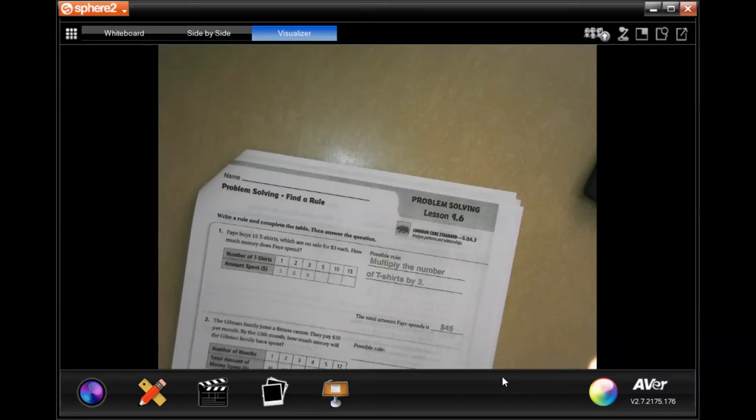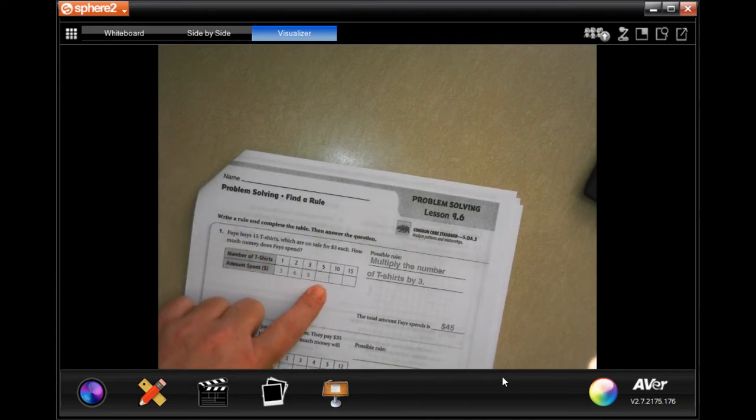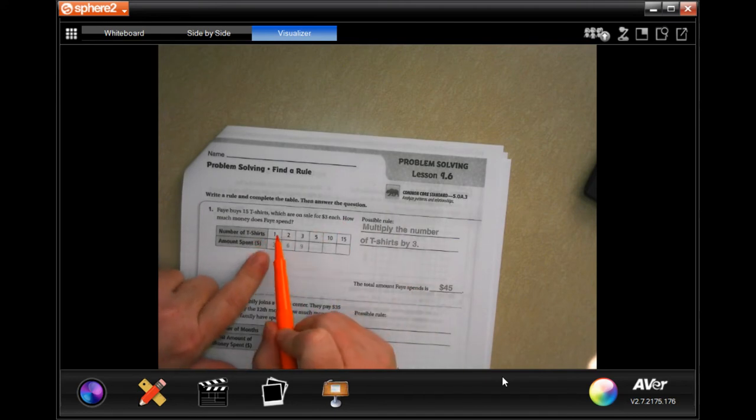Hey y'all, welcome to fifth grade chapter nine lesson six. We're going to finish out number one really fast because they didn't finish out those blocks. All we're doing is multiplying the top number by three.